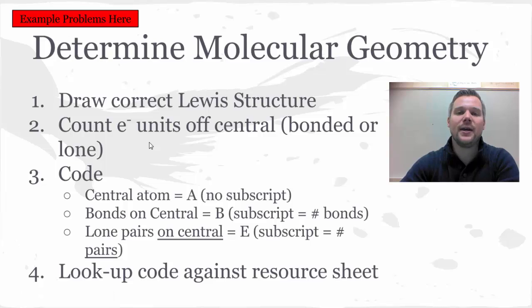So then we're going to have a code that represents what's going on in our Lewis structure. We could have multiple central atoms, so you could do one of these codes for each central atom. If you happen to have multiple central atoms, you can't use both central atoms as A. You need to do a separate code for each central atom.